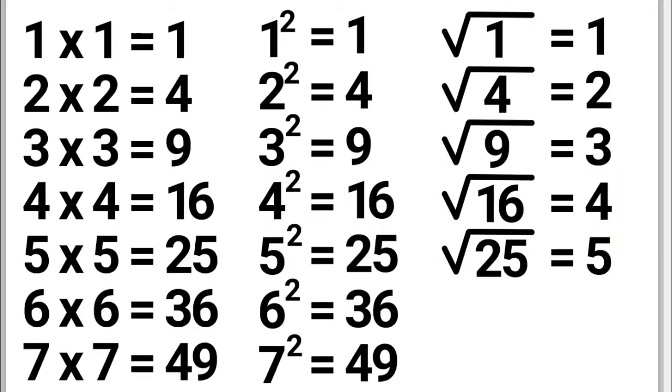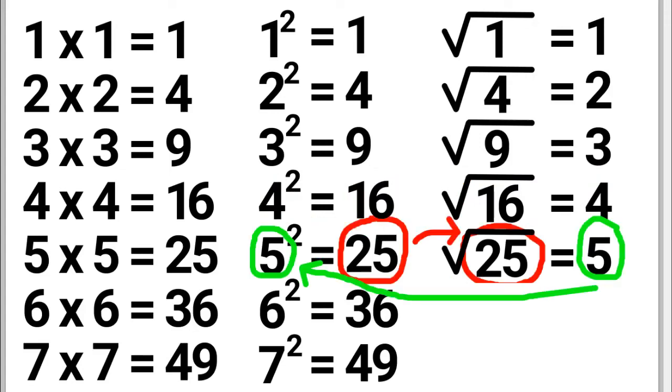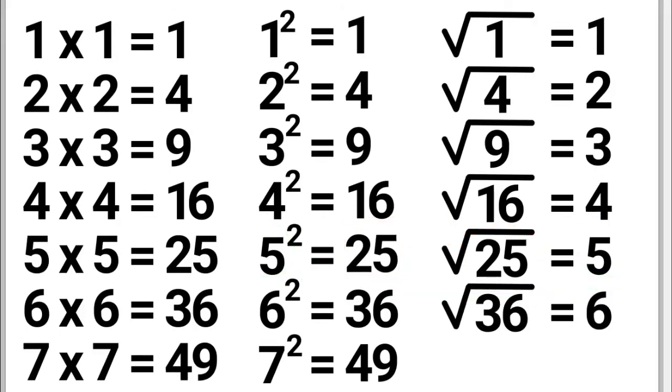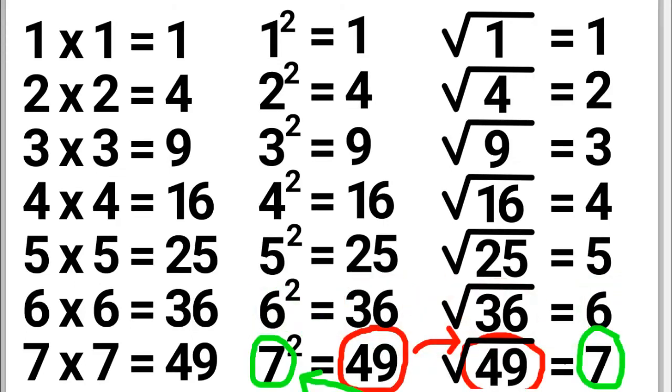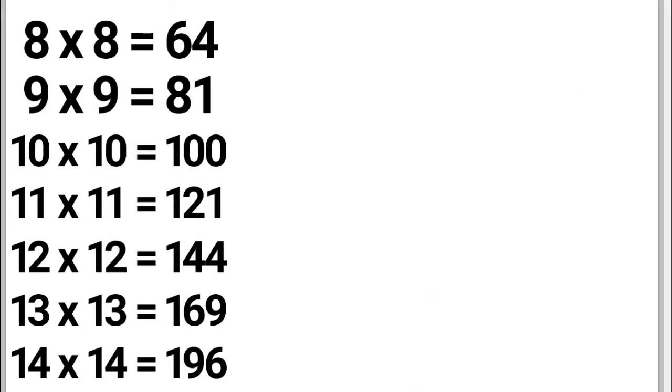The square root of 25 is 5, because 5 times itself is 25. The square root of 36 is 6, because 6 times itself is 36. The square root of 49 is 7, because 7 times itself is 49.